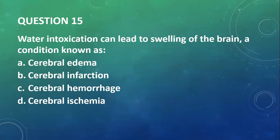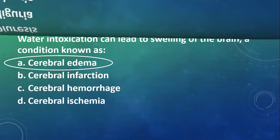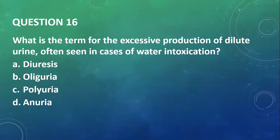Question 15: Water intoxication can lead to the swelling of the brain. I told you the brain is actually very much affected in water intoxication, so this condition is known as cerebral edema. Question 16: What is the term for the excessive production of dilute urine often seen in cases of water intoxication? Diuresis? No. Oliguria—that's production of little urine. Polyuria—that's production of much urine. Anuria—that's production of no urine. Polyuria.